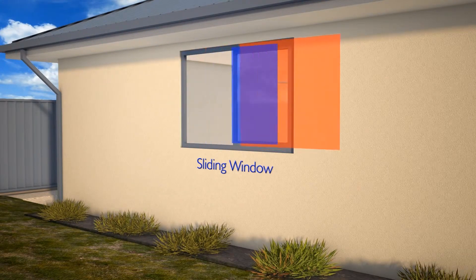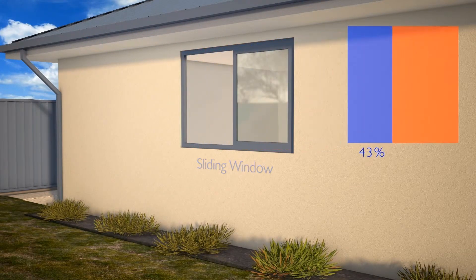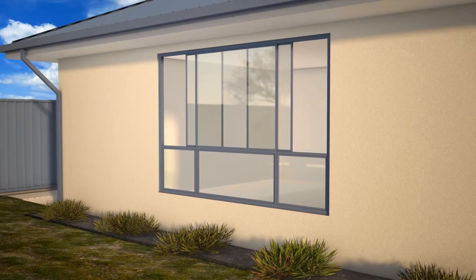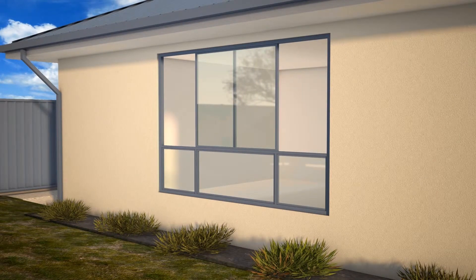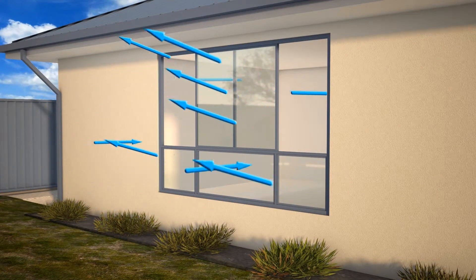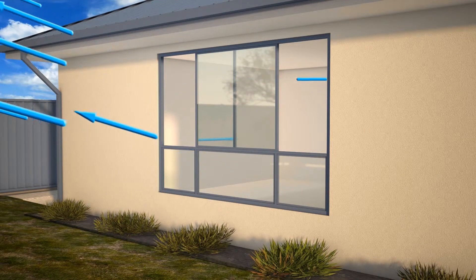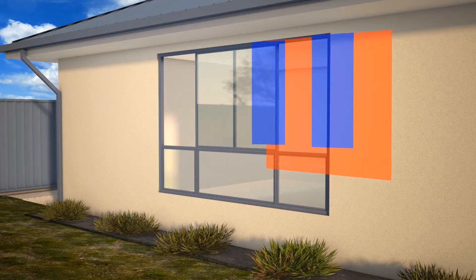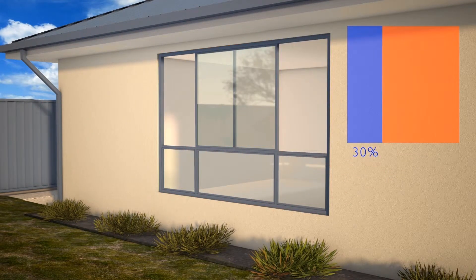Sliding windows have a fixed pane of glass, which prevents ventilation through at least one half of the window. At the sizes more typically seen in Australian homes, there are additional fixed panes in the lower third of the window, which further reduces the ventilation available through sliding windows.